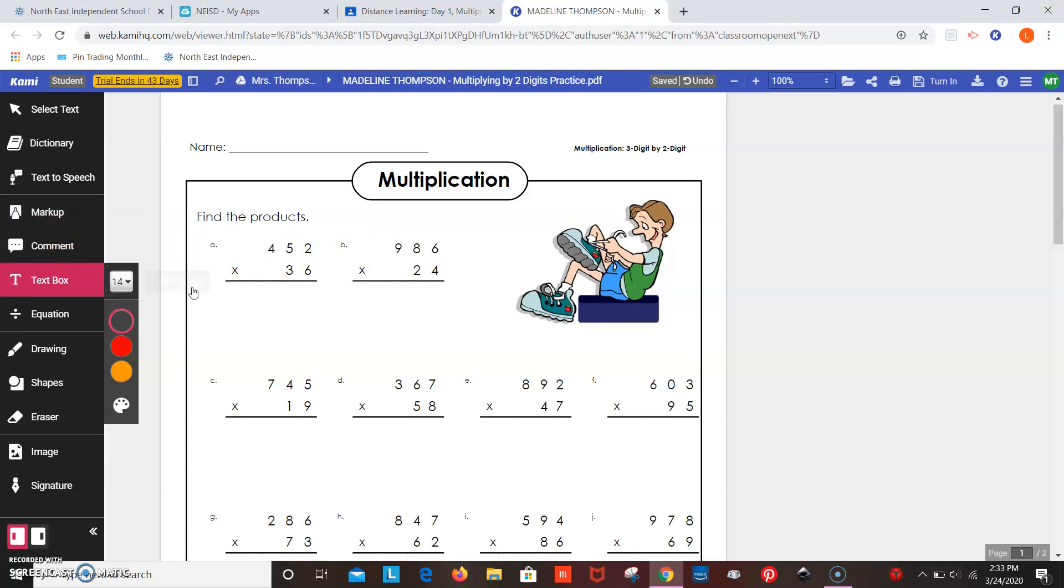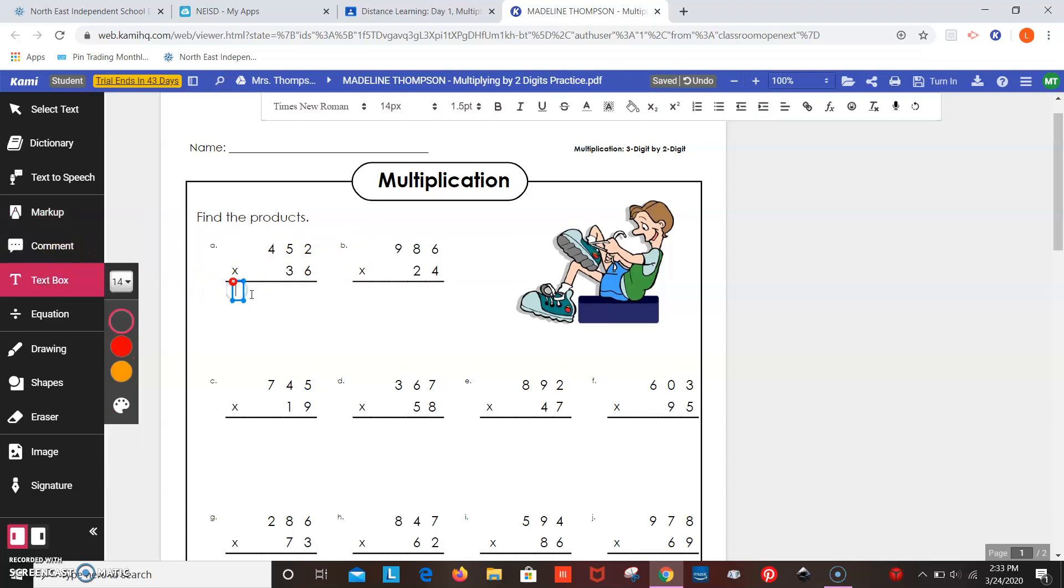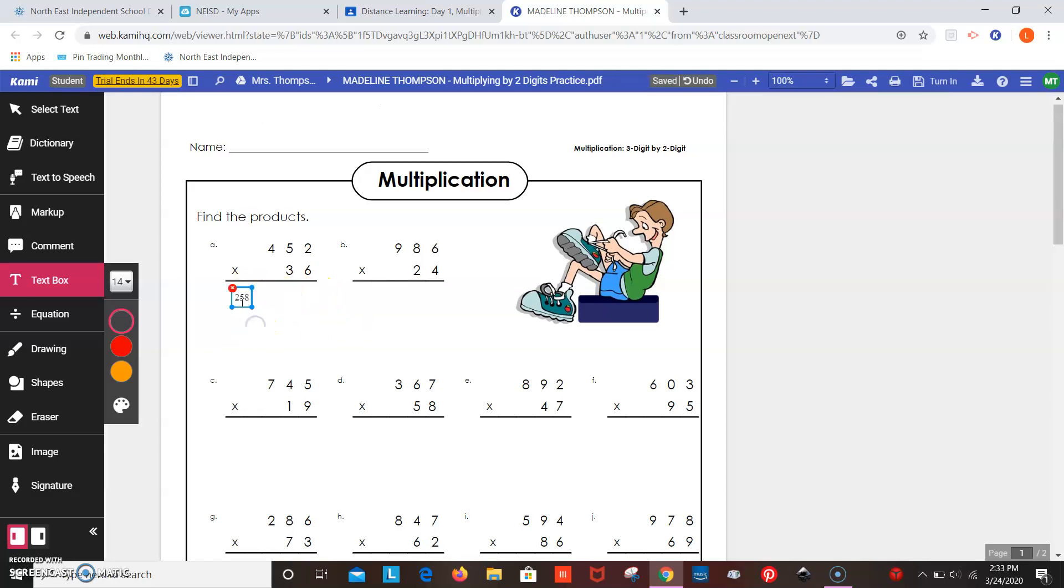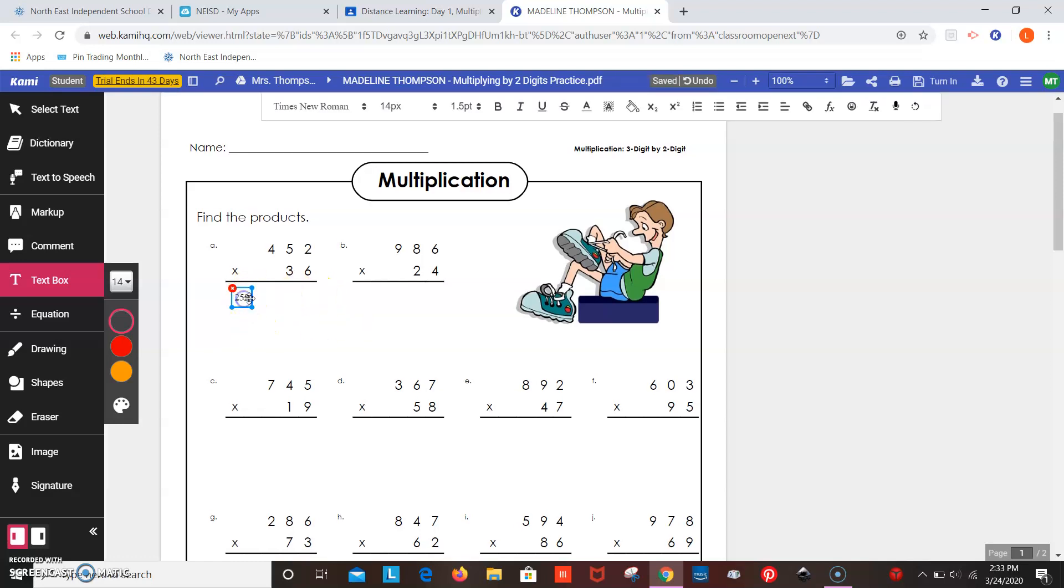Okay, you can make a text box and write your answer. So say the answer is, I don't know, 258. I don't think that's the right answer, but there I have my answer. I can move it around. I can drag it to make it the box bigger. I can delete it.